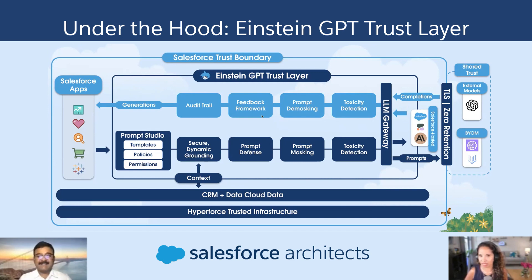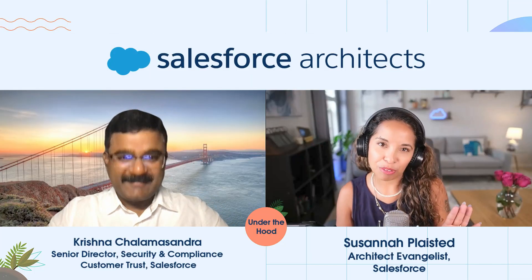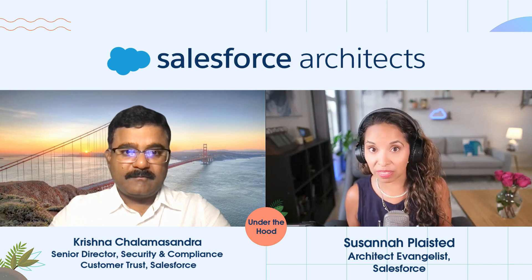Krishna, what are you most excited about when it comes to all of this new technology? Before I go there, I would like to thank and appreciate our engineering team, product team, and all the teams involved in building these things. Going from idea to production within three months is easier said than done. There is a lot of excitement in the field, and with the model we have for Einstein GPT, every month we will be releasing new GPT services as we move forward. One last question before I let you go, Krishna — what advice do you have for Salesforce architects who are working with our customers to implement this new technology?